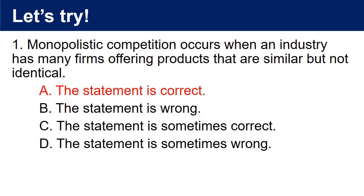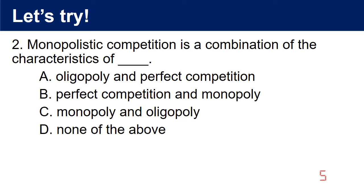The answer is A. The statement is correct. 2. Monopolistic competition is a combination of the characteristics of: A. Oligopoly and perfect competition. B. Perfect competition and monopoly. C. Monopoly and oligopoly. D. None of the above. The answer is B. Perfect competition and monopoly.